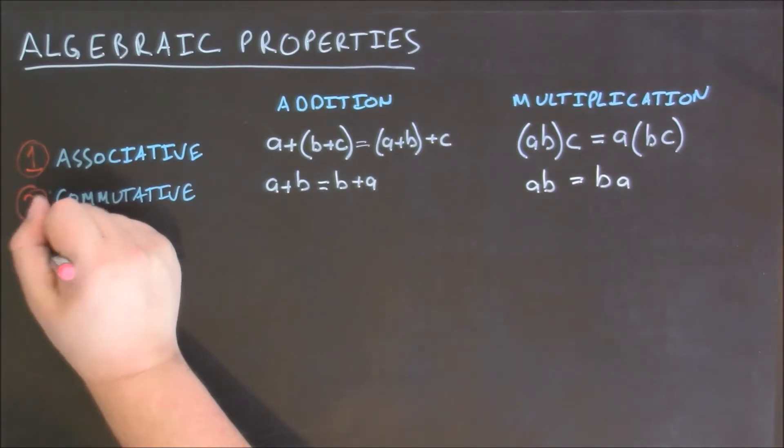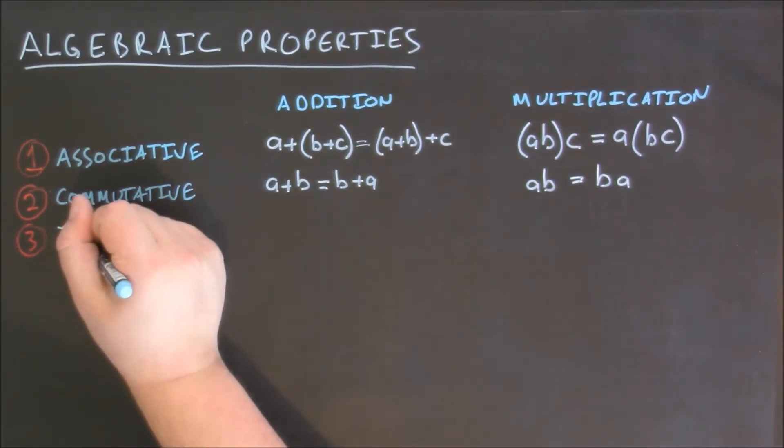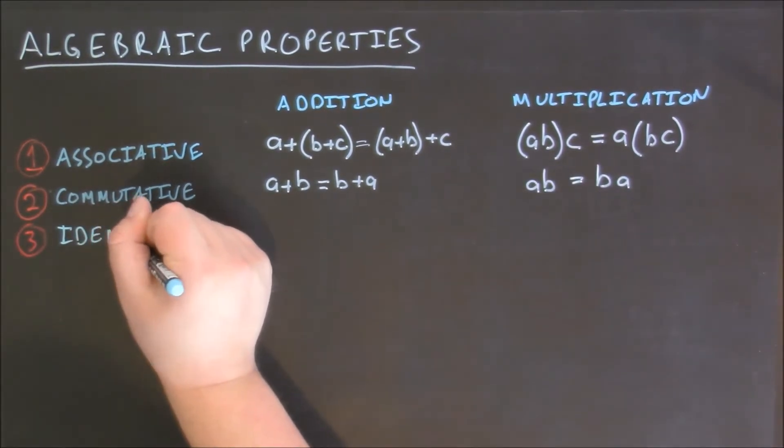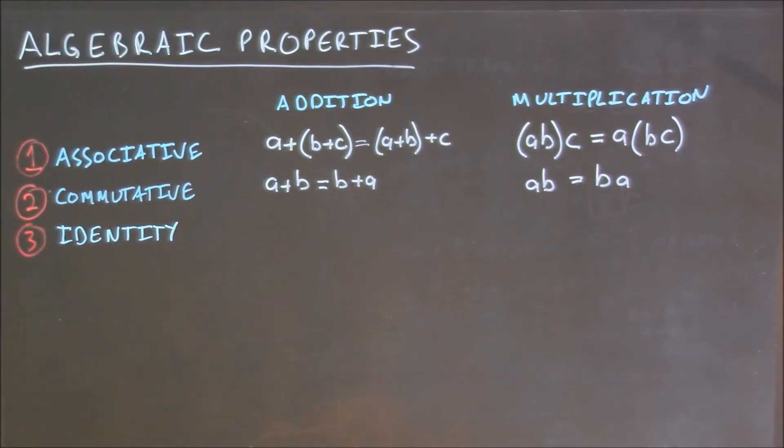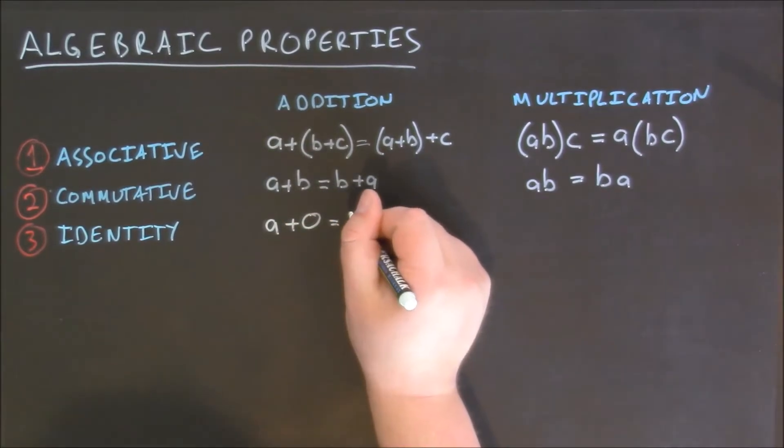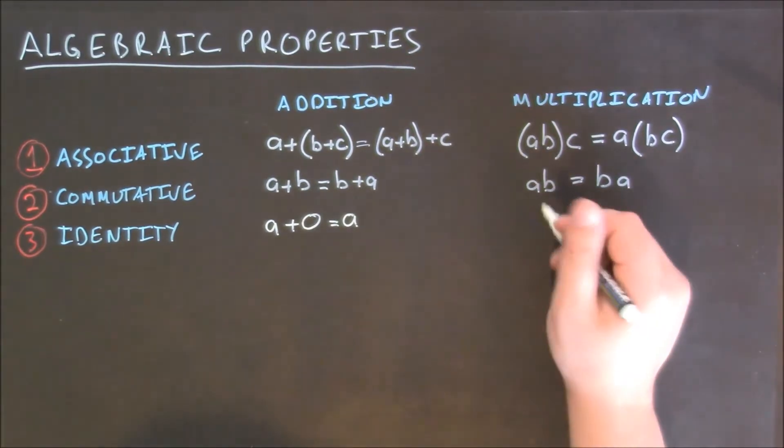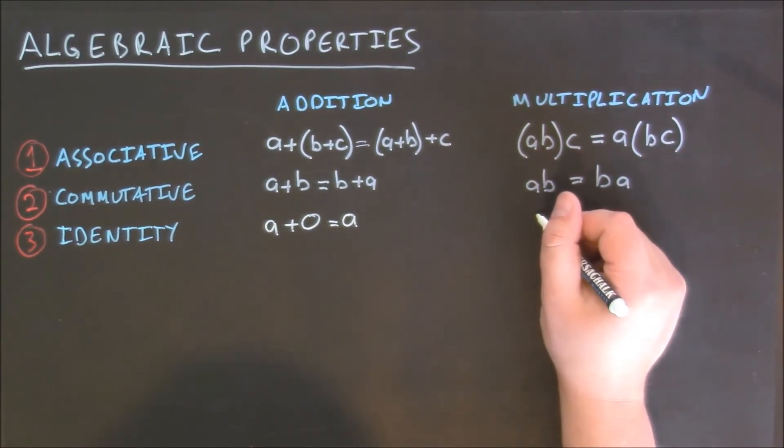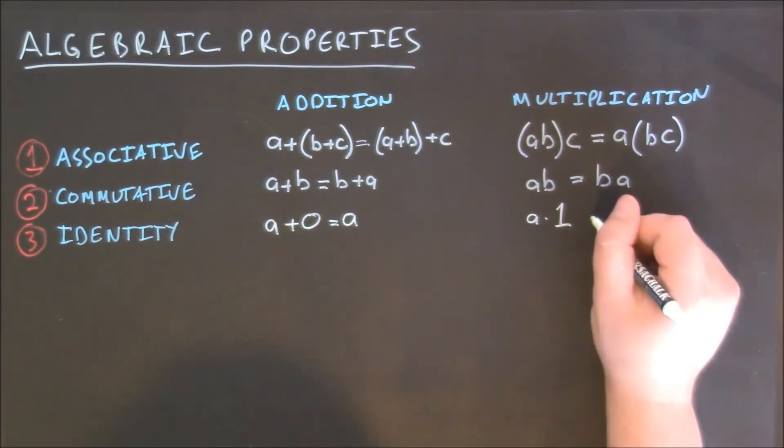The third property is the identity property. It states that if I take a and I add zero to it, I keep a. And for multiplication, if I start with a and I multiply it by the number one, I'm left with a.